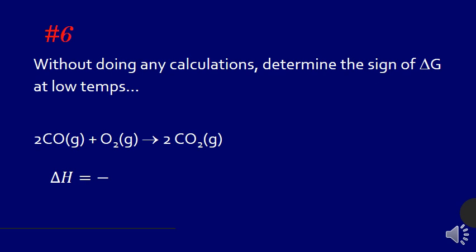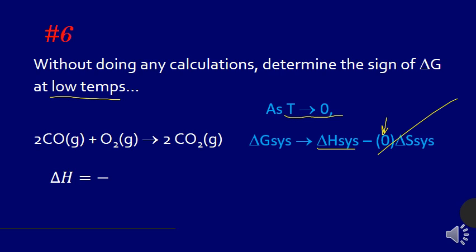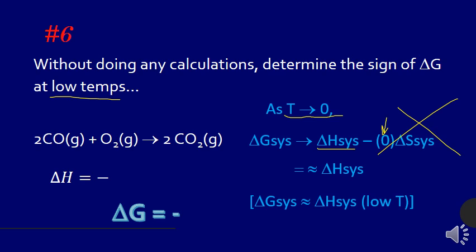Okay, without doing calculations, determine the sign of G. So notice that as the temperature approaches 0, that means that the free energy available to this system is going to depend on the change in enthalpy of the system times 0. And I'm going to say 0 because, remember, we said low temperatures, so we're assuming that temperature is approaching 0. So this part of the equation drops out. Which means that our energy is going to be approximately the same as the enthalpy of the system. In this case, the enthalpy is negative. So for low temperatures, G is going to be the same as the enthalpy, negative.